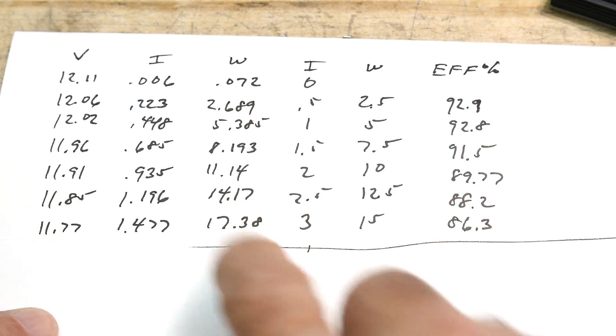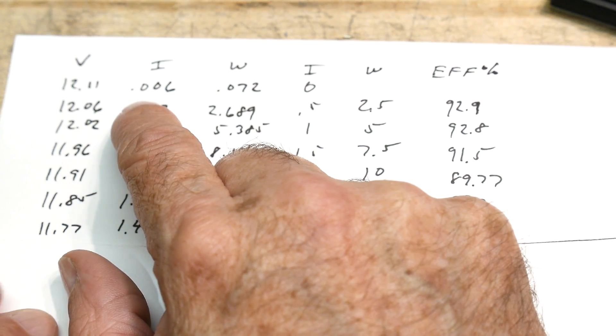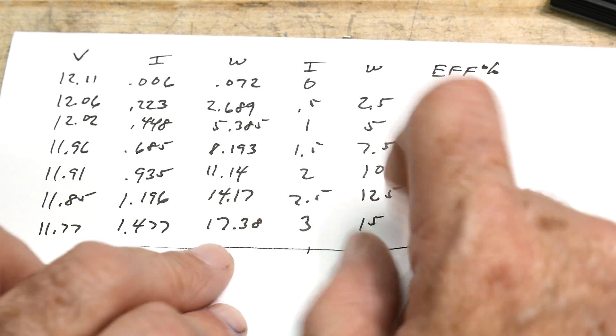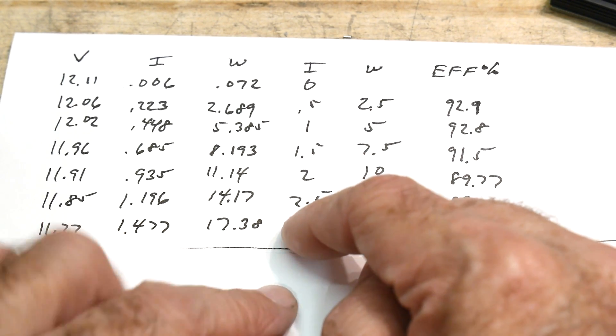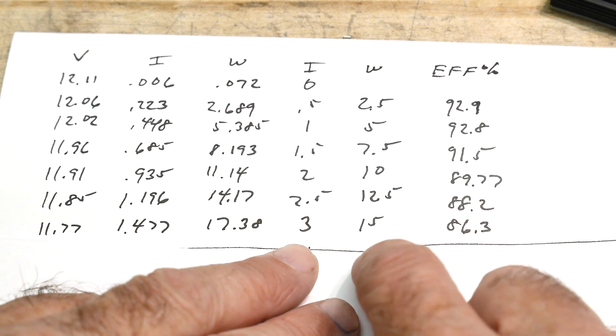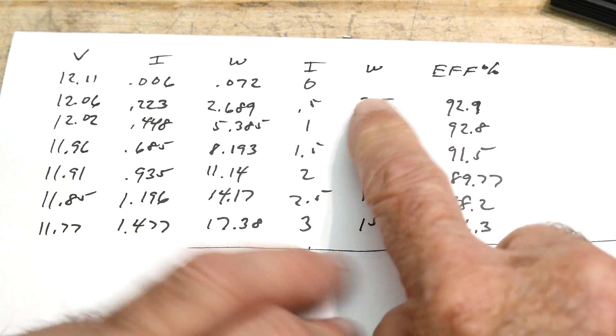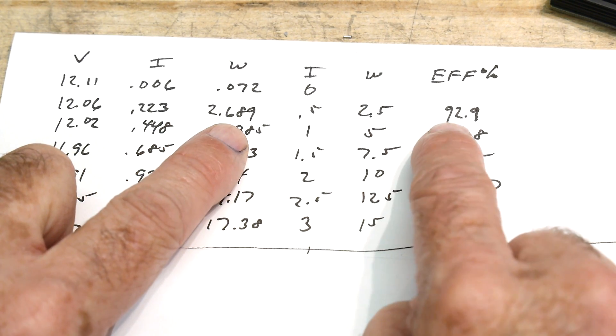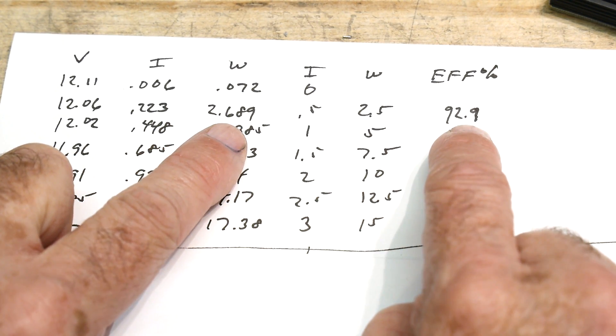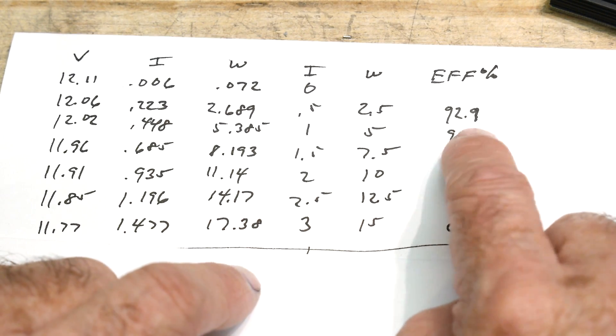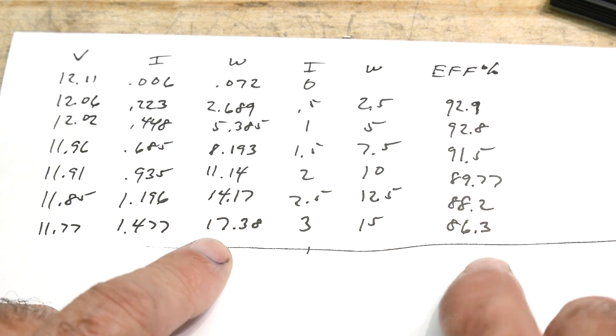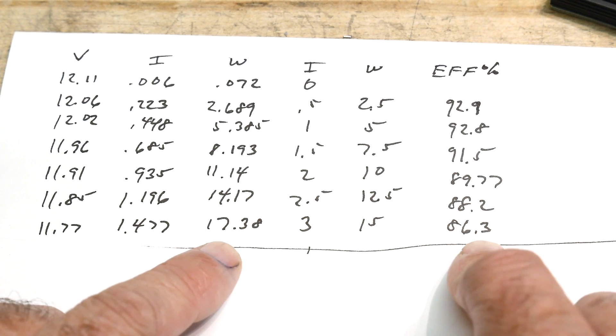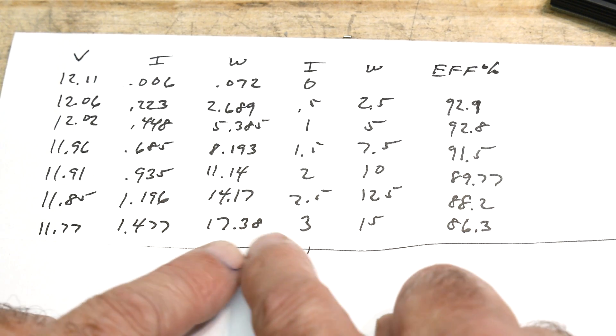All right. Here's our data. Volts in. Amps in. Volts times amps is watts. So these are the calculations. And then output is amps. Amps times 5 volts is watts. And here's our efficiency, which is watts divided by watts. Okay. So 2.5 divided by 2.689 is 92.9% efficiency. All right. So it goes from about a 93% efficiency and at 3 amps it goes down to an 86.3% efficiency. All right. So that's 15 divided by 7.38.